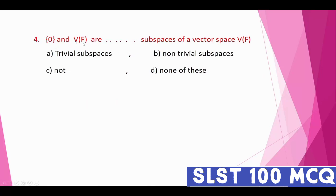Question number four: the set {zero} and vector space V over a field F are subspaces of a vector space V_F. The options are trivial subspace, non-trivial subspace, both, or none of these. The correct option is option A — trivial subspaces.